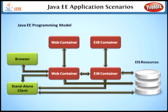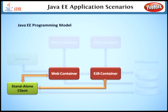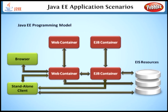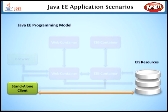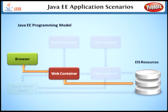Here is the diagrammatic representation of the Java EE programming model. This picture reflects a range of possible application configurations. We can see both the browser client and the standalone client, which was developed using core Java. It can communicate directly to the web container and EJB container to do processing, and can directly access the database, i.e., the EIS resources.